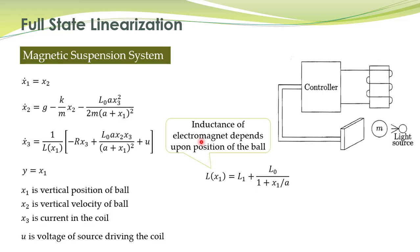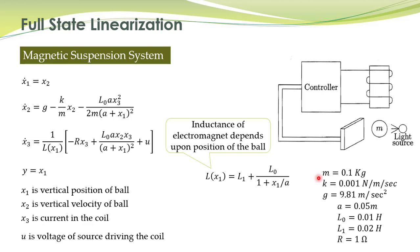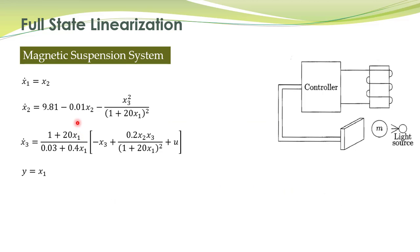Basically, L of x1 is the inductance of the electromagnet, and the inductance of this electromagnet depends upon the position of the ball. Some parameters are also given to us: m is the mass of the ball, which is 0.1, and likewise other parameters are given. By substituting these parameters and this expression into the equations, we have this state space representation of the system — we have only substituted the numerical values of all those parameters.